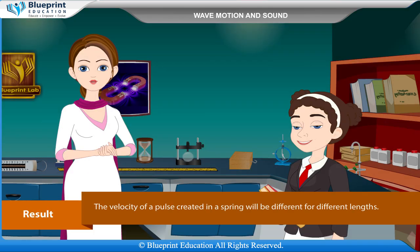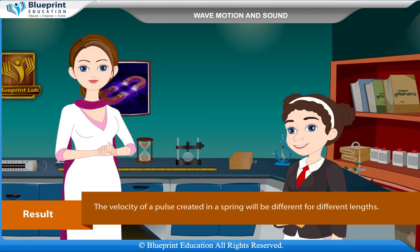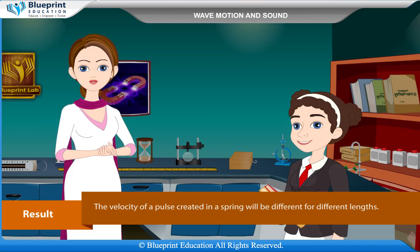Result: The velocity of a pulse created in a spring will be different for different lengths of the spring.